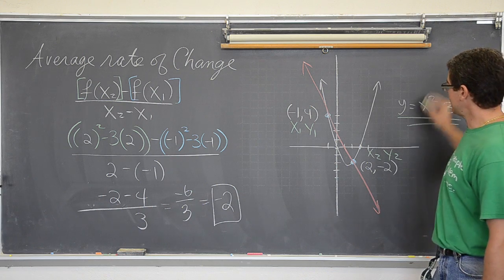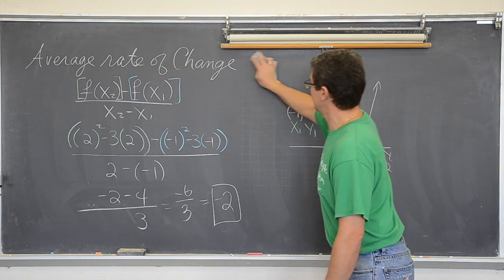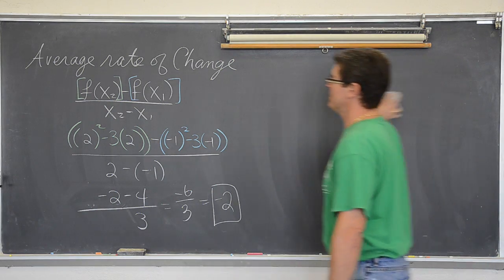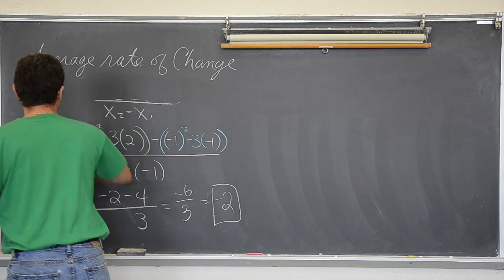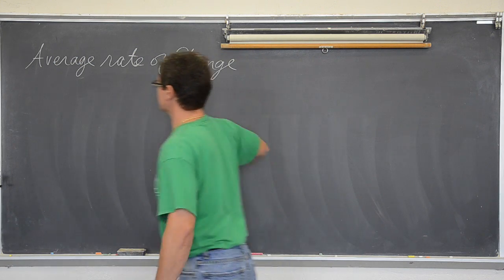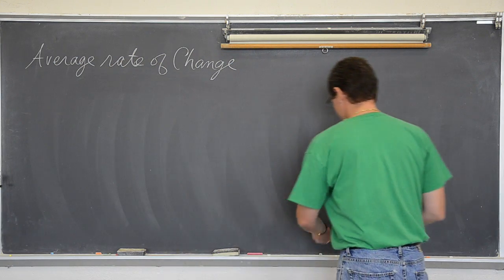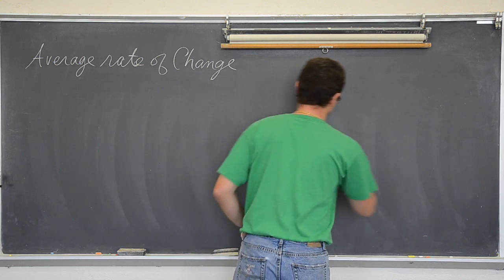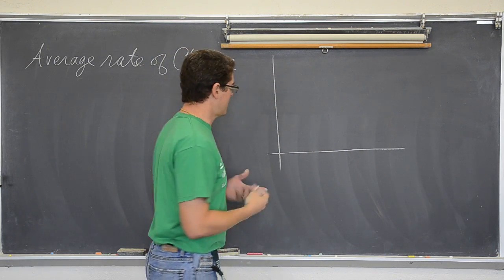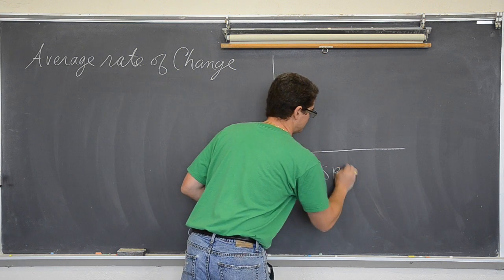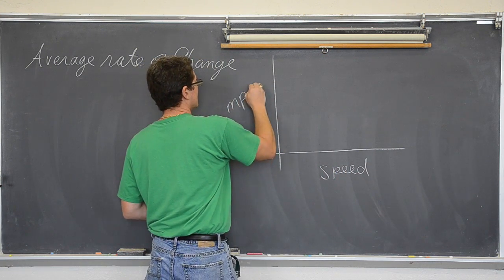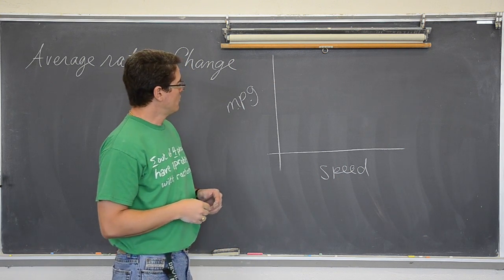Let's look at an average rate of change problem. I am just going to do a quick sketch and apply it to what could be a real life application. Let's see if we can interpret slope in that setting. So, let's say we are looking at a car and we have speed of the car hoping to explain the miles per gallon, how efficient the car is.